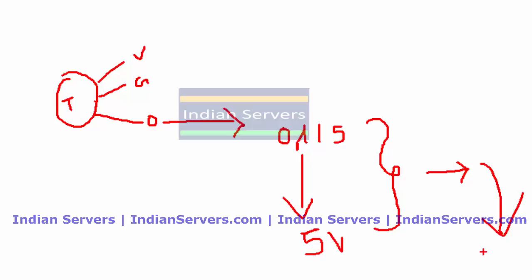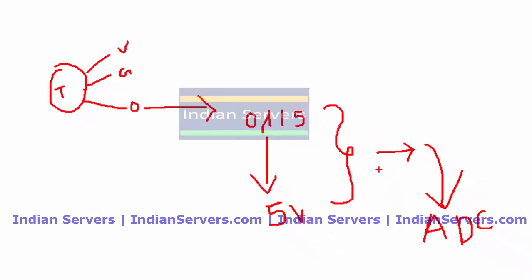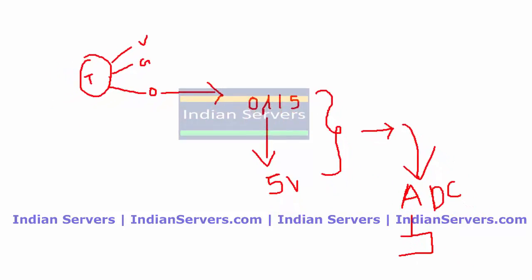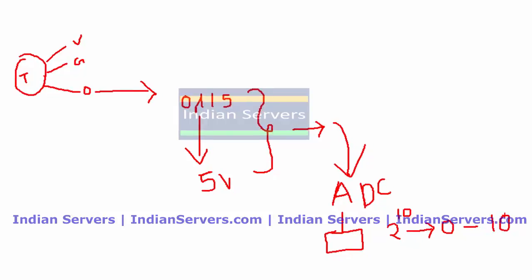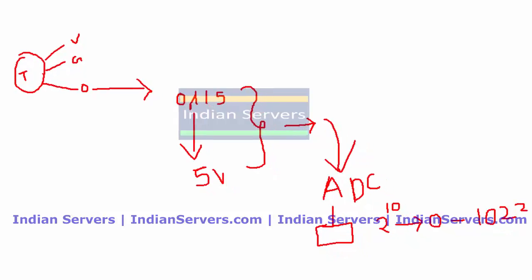For that purpose we are going to use ADC, which is analog to digital converter. It converts the analog signal into digital. In Arduino, the ADC has 10-bit resolution. Resolution is nothing but the accuracy of the ADC. After converting the voltage, the output of the ADC will vary from 0 to 1023, which is the maximum value. This decimal value can further be converted into hexadecimal if required by the microcontroller.